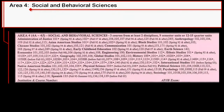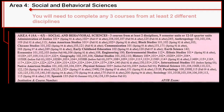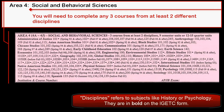Area 4 is the Social and Behavioral Science category, and you must select three courses from the list. When choosing, you must have the three courses from at least two different disciplines or subjects, such as History and Psychology.